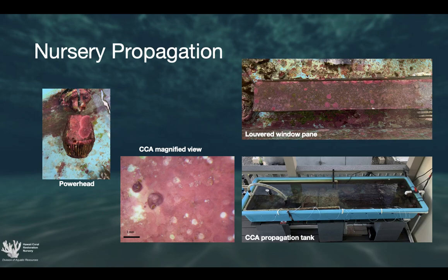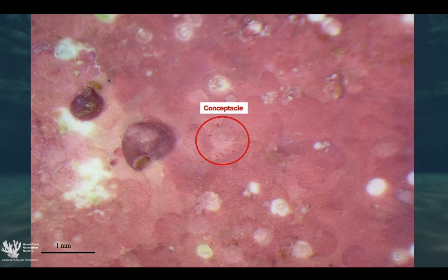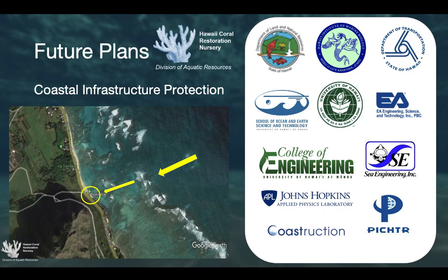So how are we growing crustose coralline algae? Very simply — in the lower right hand corner you can see we're using one single tank. We started with a very small collection of CCA and in a short period of time, using louvered window panes vertically to increase the surface area of the tank, we were able to completely cover the inside of this tank, using powerheads to help distribute those spores. There's a magnified view of CCA in the center, and if I magnify it even more, that slightly lightened color structure in the center is called a conceptacle — that's where the spores are produced. All those small red dots around it are actual CCA spores. Each conceptacle can release 10 to 20 spores, and all those little white dots you see around it are actual conceptacles that I popped open with a paperclip just a few weeks ago.